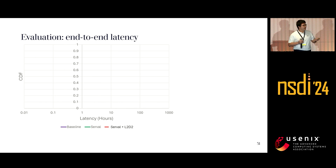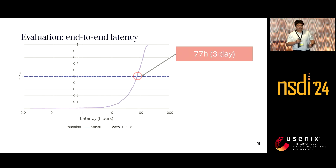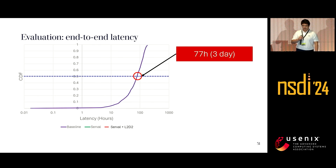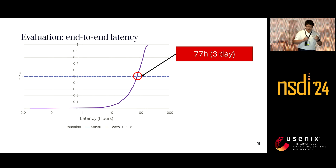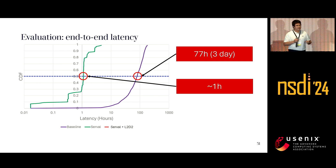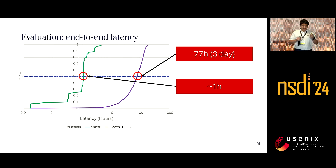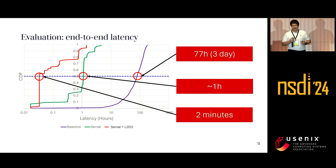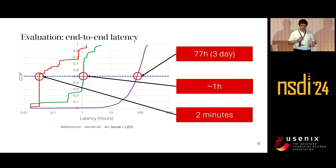The first result is end-to-end latency performance. In the baseline case where everything is delivered in order, the median latency is up to 77 hours. When you apply Servo, you can reduce the median latency of important user-requested images down to about one hour. Further, when we apply both Servo and L2D2, we can reduce latency from one hour down to just about two minutes, ensuring near real-time information delivery.